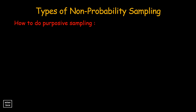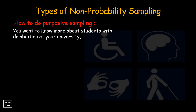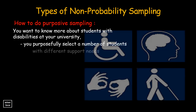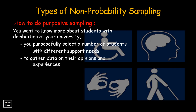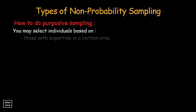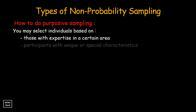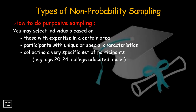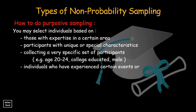Another example: you want to know more about the opinions and experiences of disabled students at your university. You purposefully select a number of students with different support needs in order to gather a varied range of data on the opinions and experiences of persons with disability. You may also select individuals based on expertise in a certain area, participants with unique or special characteristics, a very specific set of participants — for example, age 20 to 24, college educated, male — or individuals who have experienced certain events or phenomena related to your research topic.